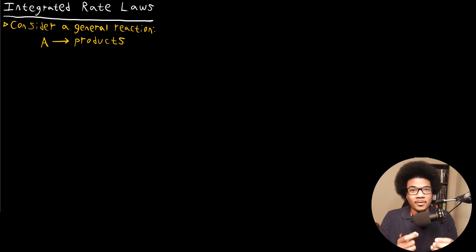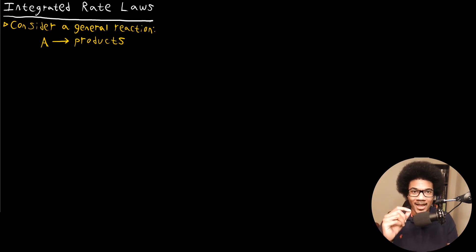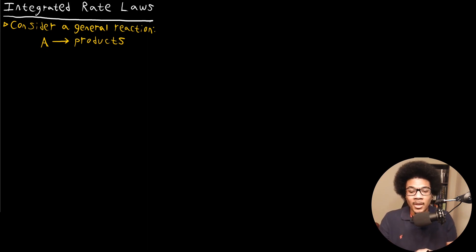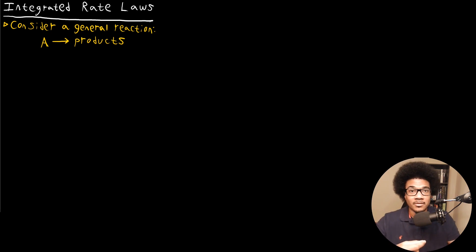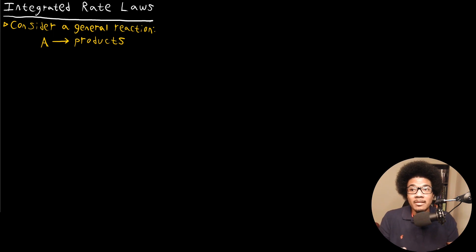In this video, we're going to introduce the concept of integrated rate laws. In one of the previous lectures on rate laws, I noted that there are two different types of rate laws: differential rate laws and integrated rate laws. Differential rate laws relate the rate of the chemical reaction to a rate of change, but one of their limitations is that they only tell you the rate at which something is decreasing. They don't give you the absolute predictive power to say at time T there will be a concentration of X. That's what the integrated rate law gives us, and it's built on the differential rate law.